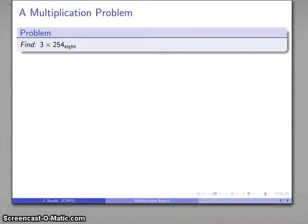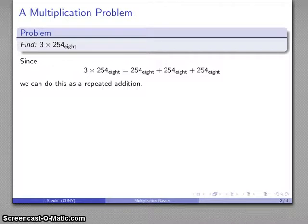That's a lot of drawing out, so let's move to a more abstract representation. Find 3 × 254, this time working base 8. This is just a repeated addition: 3 of 254 base 8 is 254 base 8 plus 254 base 8 plus 254 base 8.